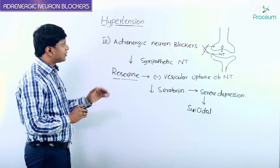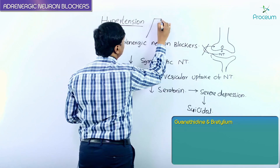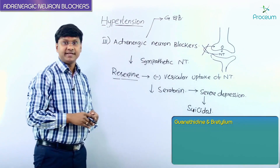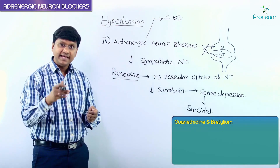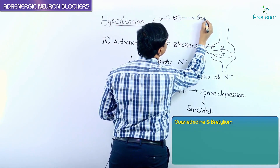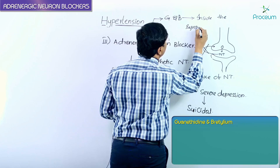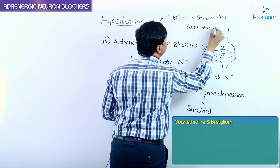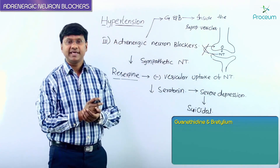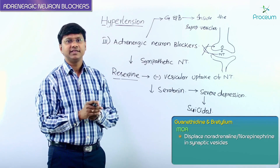Now looking at the other drugs in this group — guanethidine and bretylium — these drugs are taken up inside the synaptic vesicles. Once they are taken up inside the synaptic vesicles, they will displace the stored noradrenaline present within the vesicles.